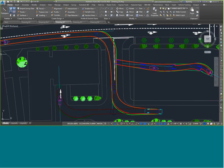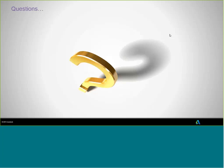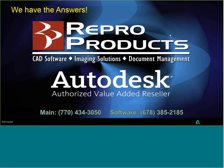That pretty much concludes everything. If you've got any other questions, give us a call at 770-434-3050, ask to talk to myself or an account manager, or visit our website at www.rebroproducts.com. Have a nice day and enjoy the rest of your afternoon. Thank you for attending.